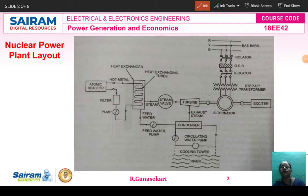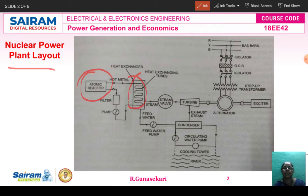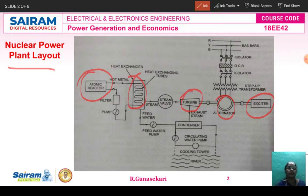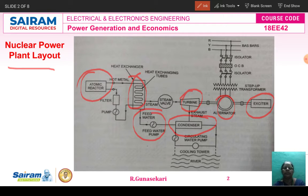Now you see the nuclear power plant layout. This is the atomic reactor, means nuclear reactor. This is the heat exchanger, turbine, alternator. The exciter is used to give excitation to the field winding of the alternator, then the condenser, then the feed water circuit. This is the steam water, that is the steam. These are the components used in the nuclear power plant layout.